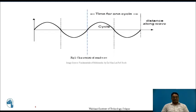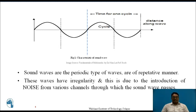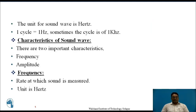So what are the characteristics of a sound wave? The above diagram shows a sound wave which has two cycles. One cycle generally denotes the time of one cycle and the x-axis generally denotes the distance along the wave which is travelled. Sound waves are generally periodic type of waves and have a repetitive manner. These waves are irregular in their behaviour when noise affects them as the sound waves pass through the channel. The unit for sound wave is hertz; one cycle equals one hertz, and sometimes the cycle is of one kilohertz.